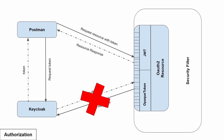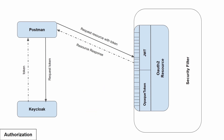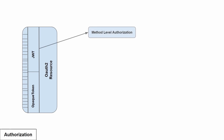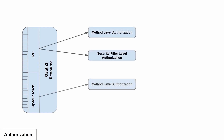In JWT and in the opaque token we have two different ways of authorization: method level authorization and security filter level authorization.